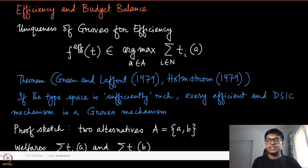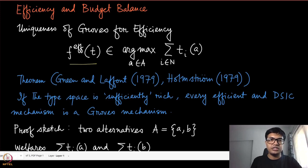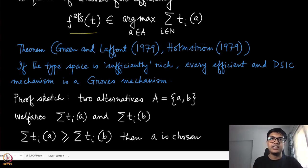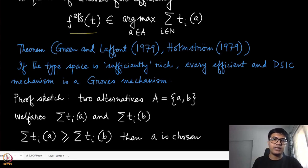In the Groves class, we essentially try to find the efficient allocation, which is the allocation that maximizes the sum of the values of all the agents. The first result, due to Green and Laffont and independently by Holmstrom, shows that if the type space is sufficiently rich — meaning all possible kinds of valuations are feasible — then every efficient and DSIC mechanism is a Groves mechanism. This is a very strong characterization result: if you want efficiency and dominant strategy incentive compatibility, you must be in the Groves class.